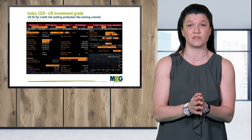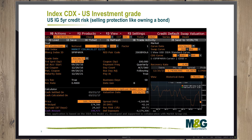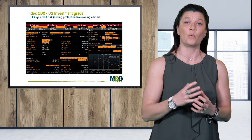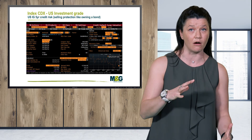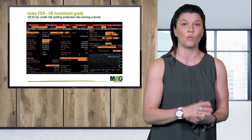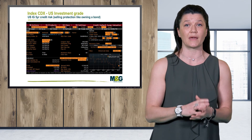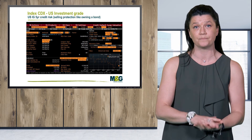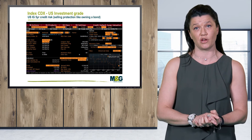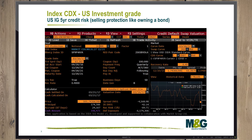Our screenshot shows us an index CDS — this is the US investment grade universe as a whole. It contains 125 of the most liquid North American entities. These have an average credit spread and combine to form an index of credit, currently trading at 61 basis points. When credit conditions deteriorate, this number gets larger, reflecting spread widening. When conditions improve, the number gets smaller, reflecting spread compression. The chart in the bottom left shows compression over time as the US investment grade space has improved over the last five months or so.